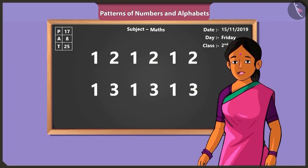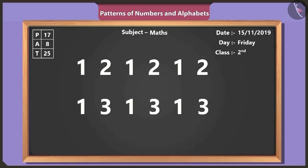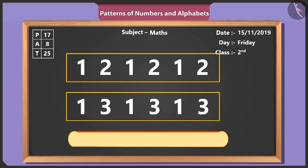Well done, Vinny, Vinny. Now can you tell me what is special about these numbers? Here in the first line, the number one and two are repeated again and again. And in the second line, number one and number three are repeated. Oh yes, this has become a pattern of numbers.